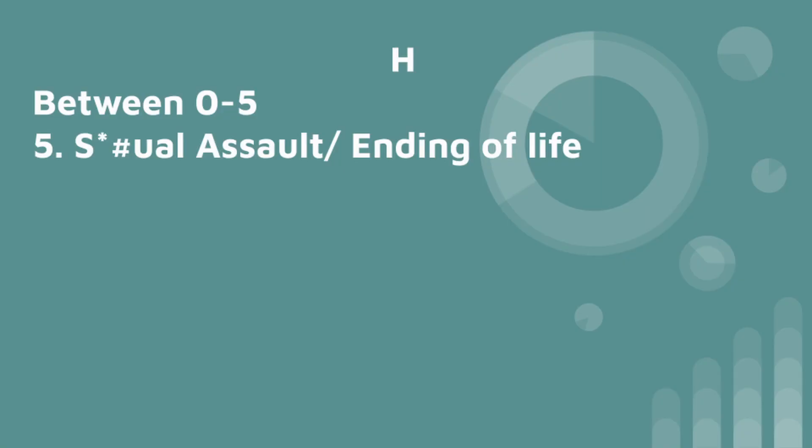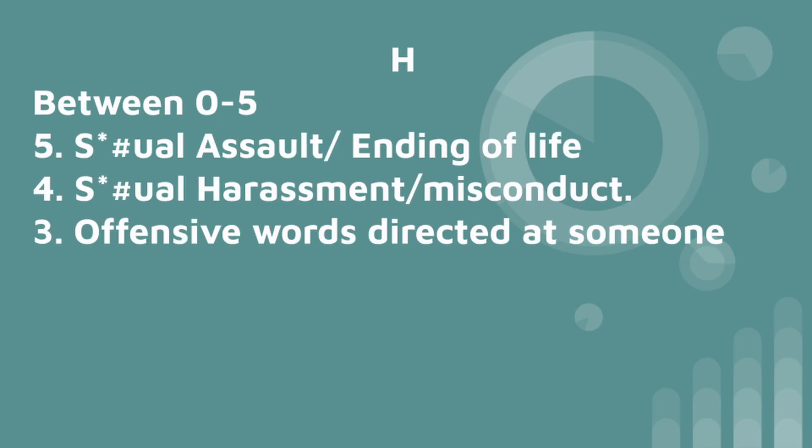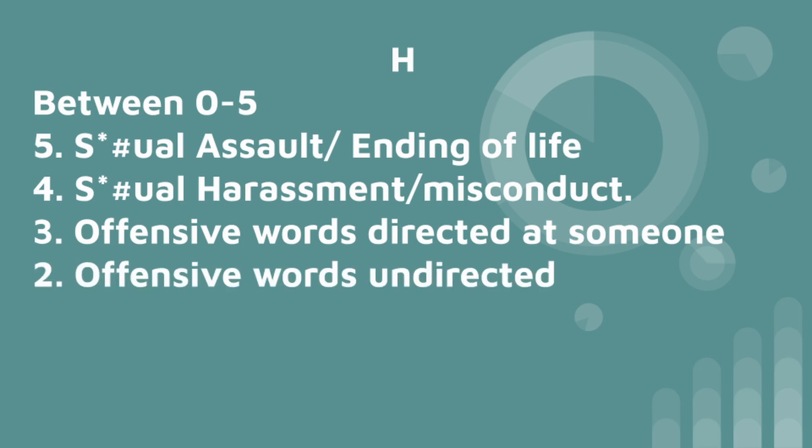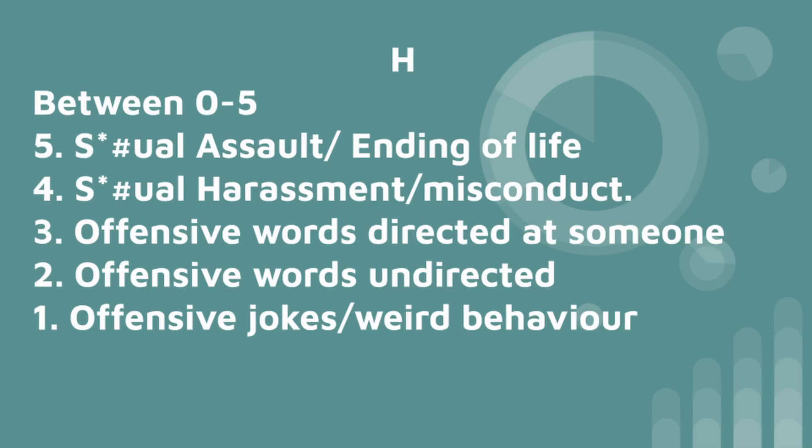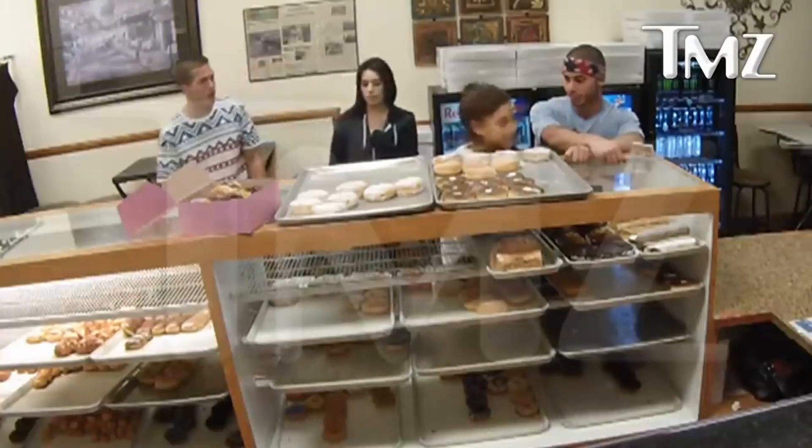This variable will be called H and will be assigned a value between 0 and 5. I'm going to use some abbreviations here because YouTube doesn't like people talking about this, even in an obviously educational way. This is a very educational video. So, 5 will be on the high end and will include things like SA and the ending of people's lives. 4 will be sexual harassment or sexual misconduct. In the middle at 3 will include things like derogatory and offensive words being used and directed at someone. 2 will be offensive or derogatory words as well, but not being used specifically at someone — maybe in a joke where it's not really appropriate. And 1 will be like offensive jokes that aren't necessarily horrible, kind of dark humor stuff, or just weird behavior like when Ariana Grande licked that donut for some reason.